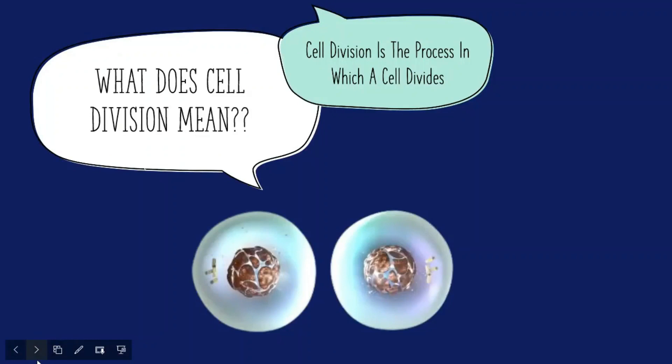What does cell division mean? Cell division is the process in which a cell divides.